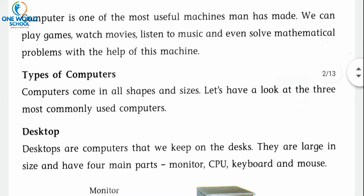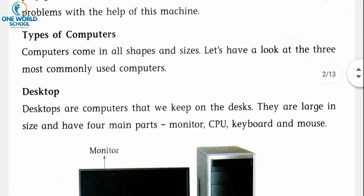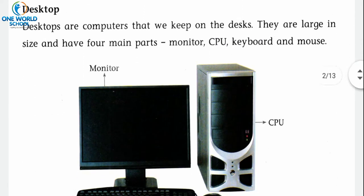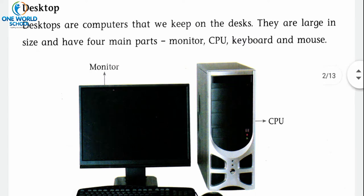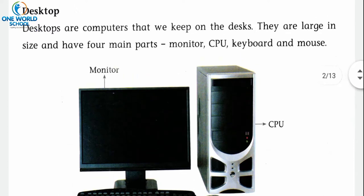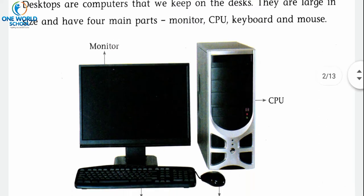The first type is desktop. Desktops are computers that we keep on the desk — यानि कि table के उपर रख सकते हैं। They are large in size and have four main parts. वो size में large होते हैं और उसको easily move नहीं कर सकते। उसके main four parts हैं: monitor, CPU, keyboard, and mouse.